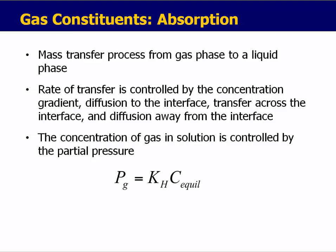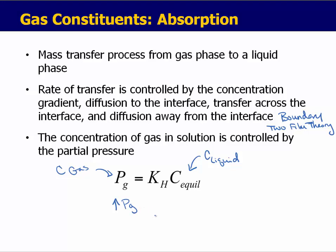This is sometimes called boundary conditions, or you may hear it referred to as a two-film theory. In principle, the concentration of gas in solution — C equilibrium, the liquid concentration — is controlled by the partial pressure in the gas phase, PG. The higher the partial pressure, the higher the concentration in the liquid phase.